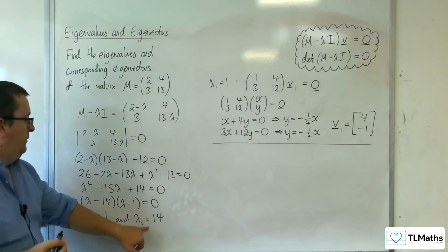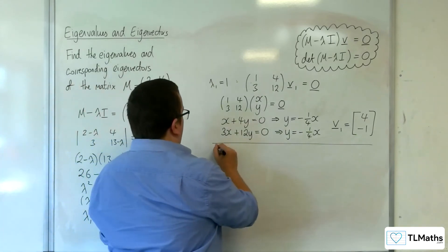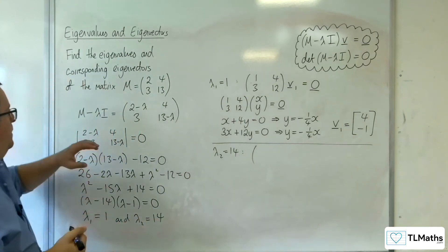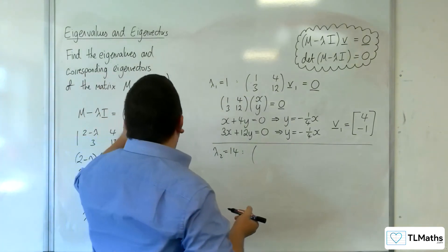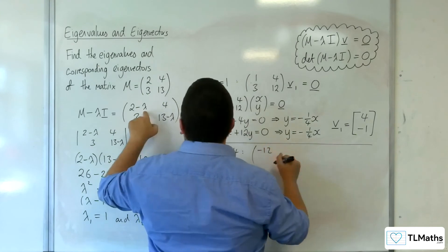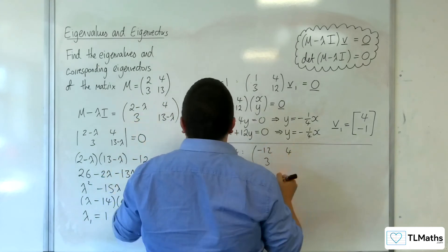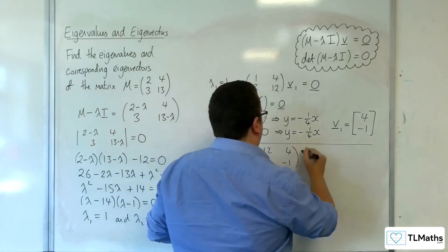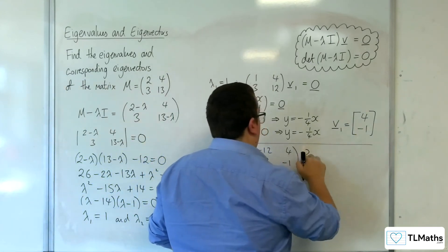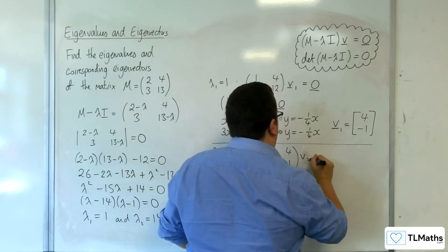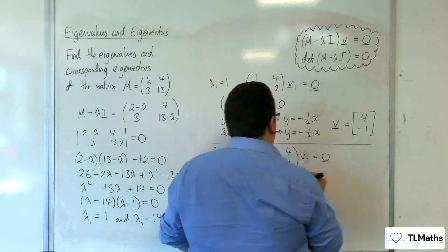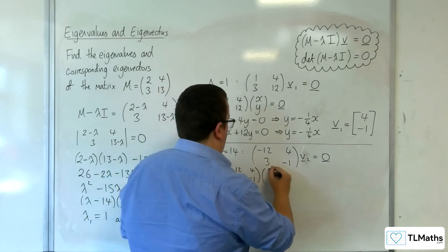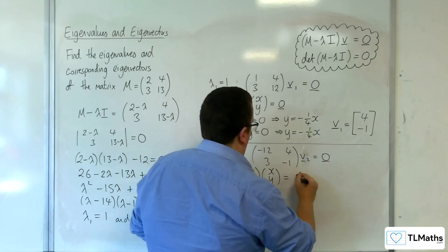Now let's have a look at the second eigenvalue. So lambda 2 is 14. Pop that in there. So 2 take away 14 gets us minus 12, then we're going to have 4, 3, then 13 take away 14 is minus 1. So that's times v2 is equal to 0. So minus 12, 4, 3, minus 1 times x, y will be equal to the 0 vector.